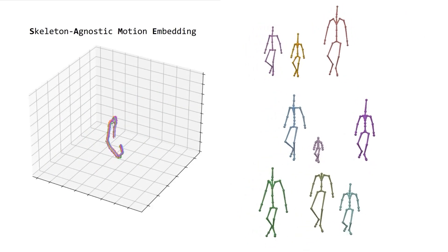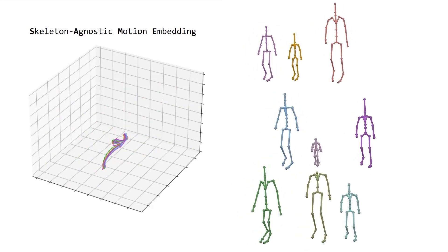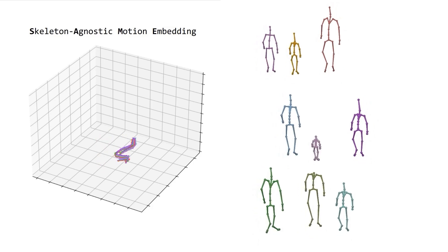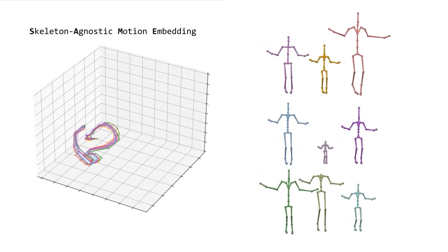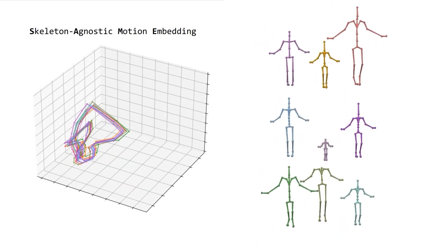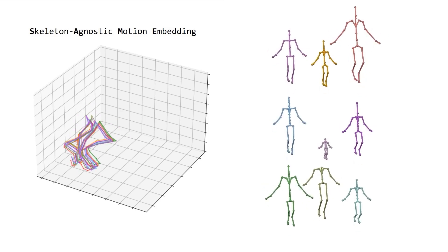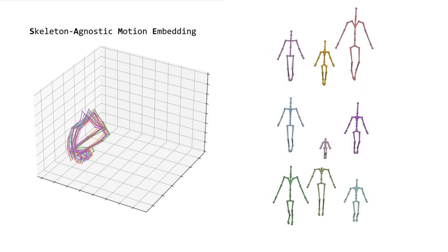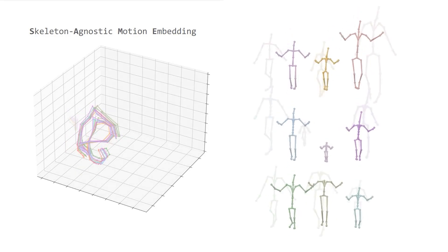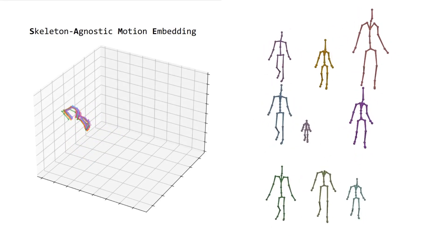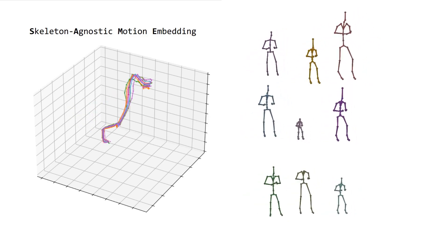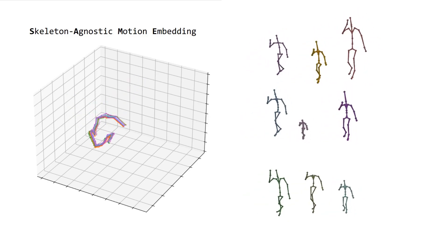The plot on the left visualizes SAME-space projection of motions on the right, which have different skeleton structures from each other. For motions that share the semantics, our model projects them to highly similar embeddings. This implies that our SAME space effectively captures the semantics of motions regardless of the skeleton.